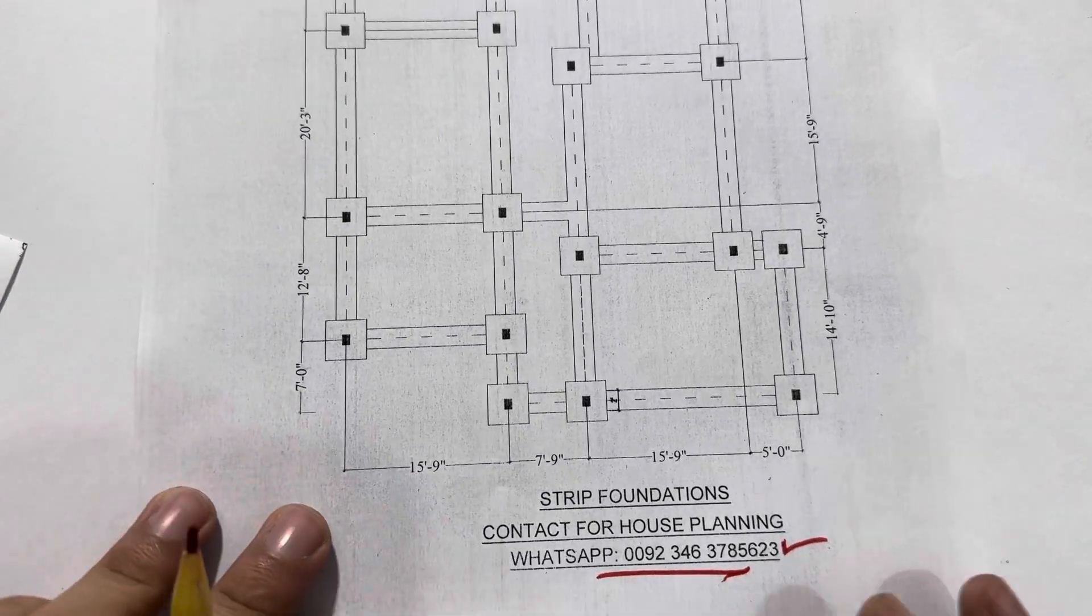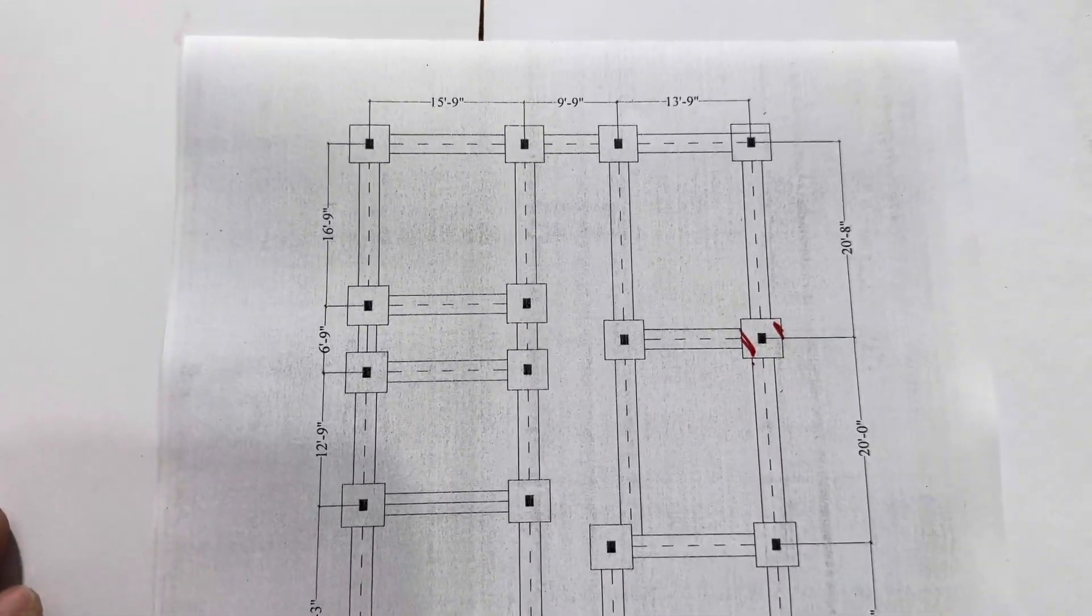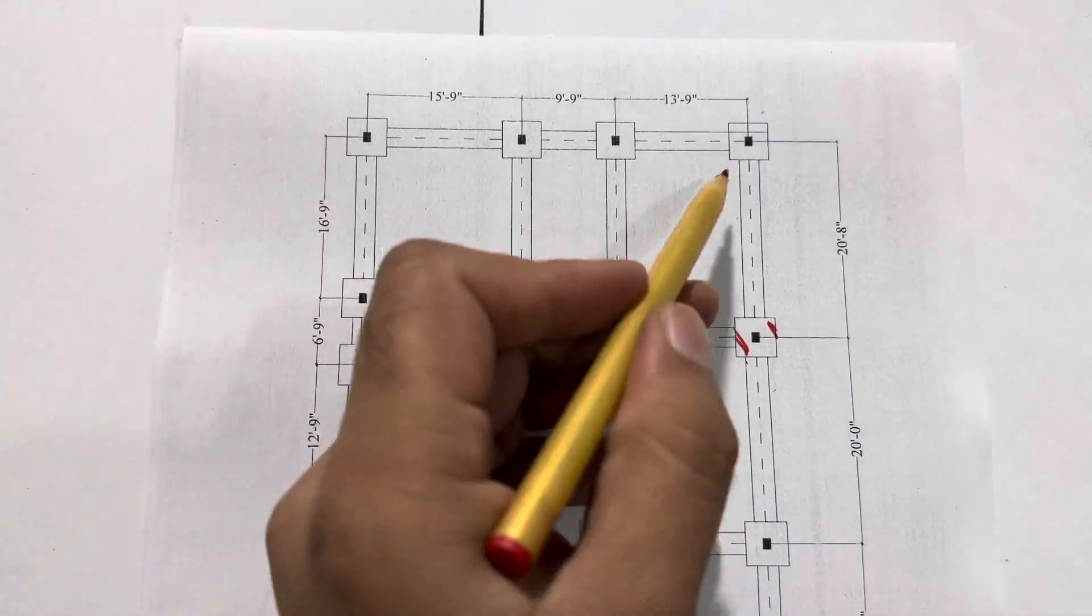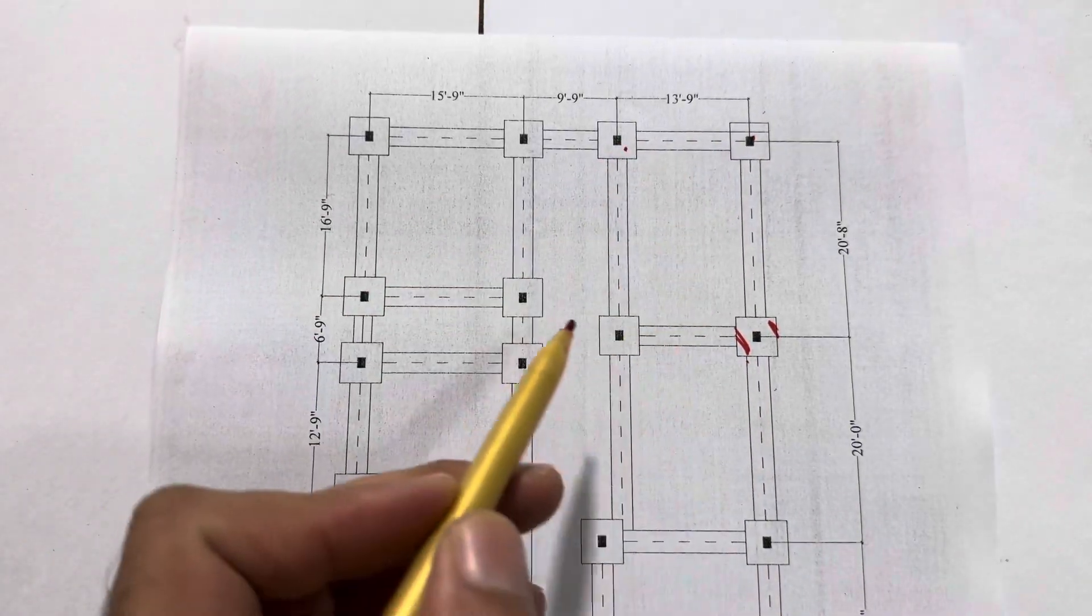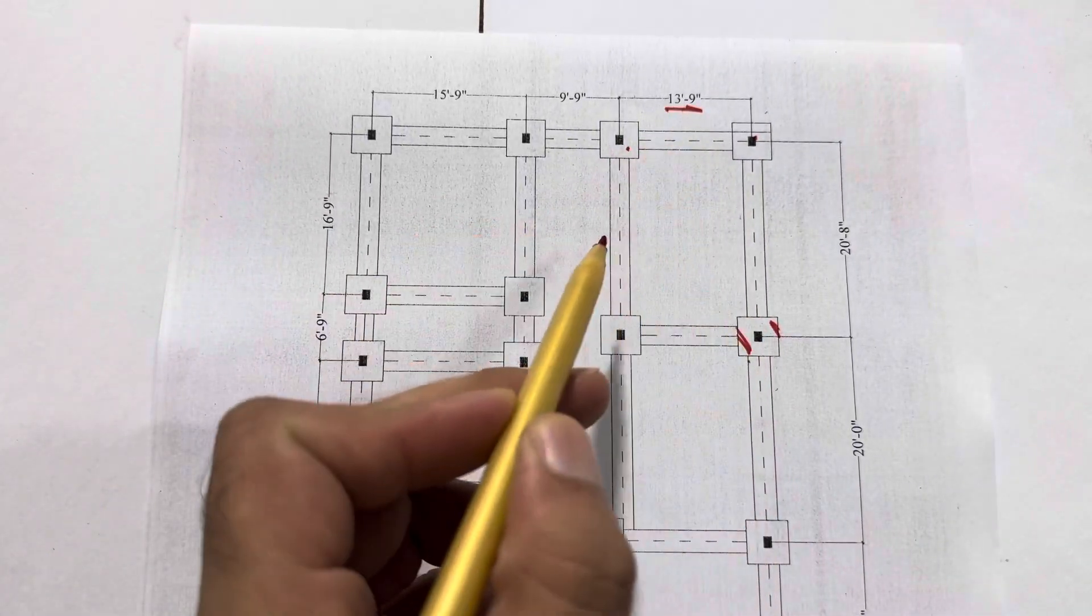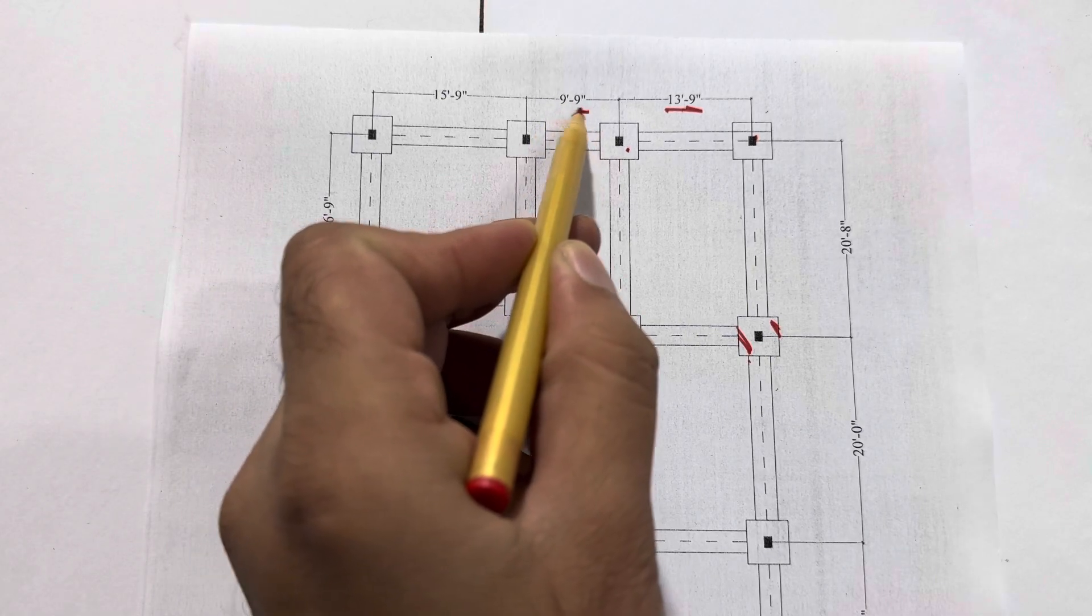You can see the footing plan. If you see from one column to other column central line, the spacing is 13 feet 9 inches. From other column to the other central line or footing central line is 9 feet 9 inches. The other one is 15 feet 9 inches.